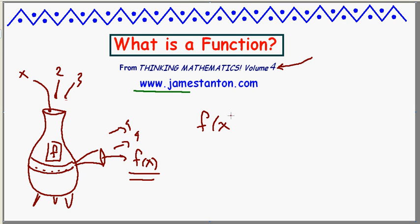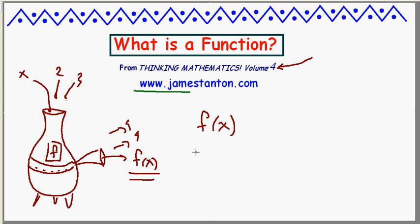We use the notation f(x) for the function f applied to input x. This is actually a really bad notation — kids have every right to complain about it. A better notation would be to start with the value x and hit it with the transformation f. But that's not going to catch on — we read left to right, and that would be the natural way to do it, but it's too confusing.